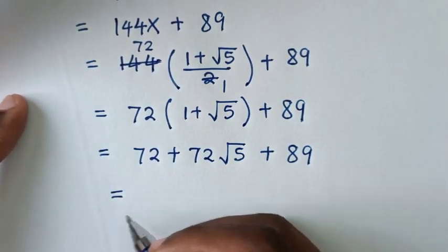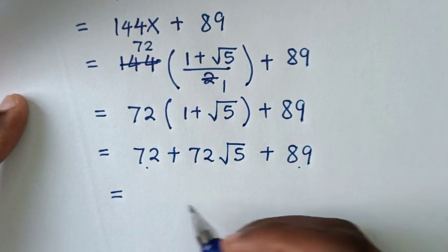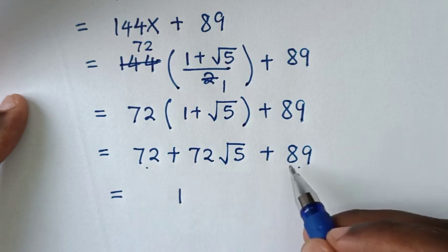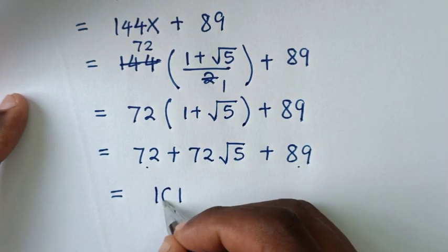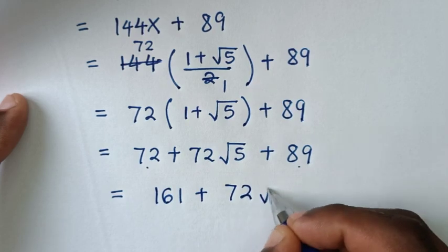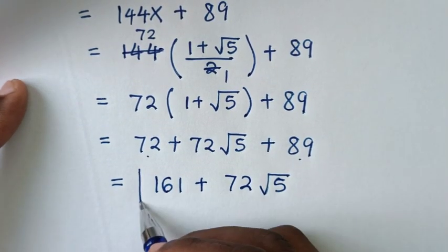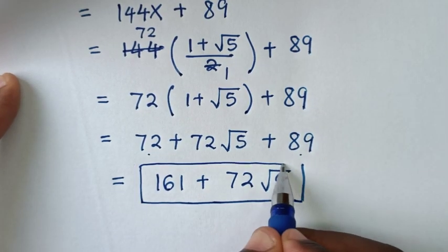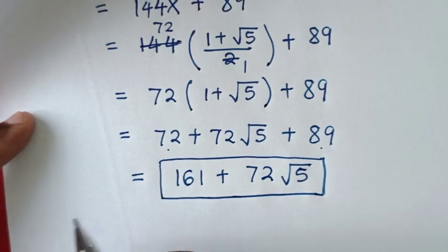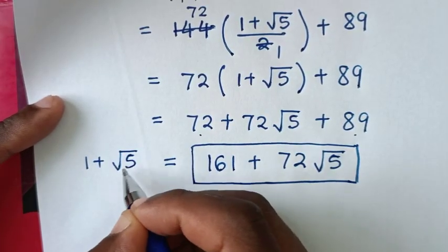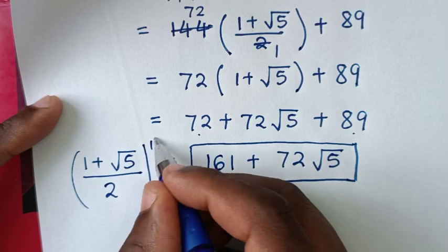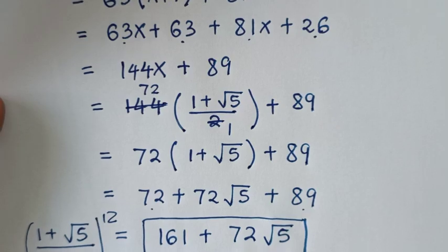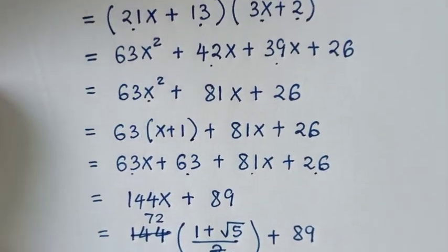So taking 72 plus 89, that is 161, plus 72 square root of 5. So this is the final answer, the simplified form of (1 plus square root of 5) over 2, bracket, power of 12, equals 161 plus 72 square root of 5. Thank you for watching, don't forget to subscribe to my channel, and see you in the next video.